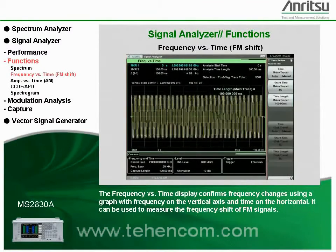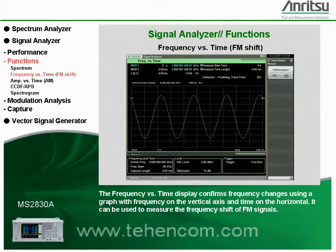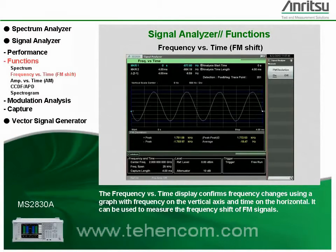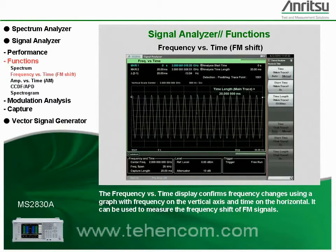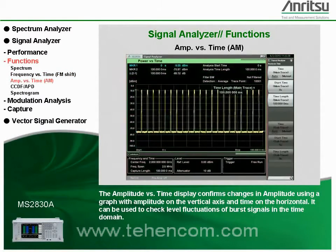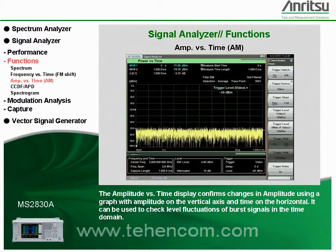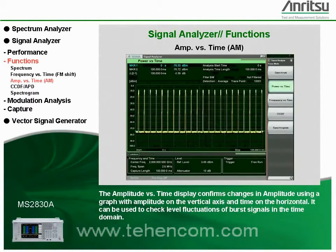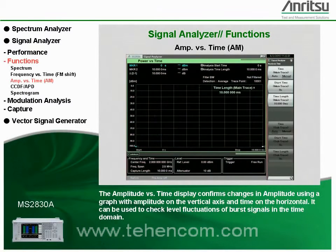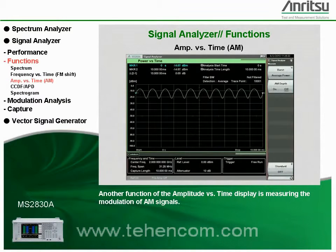The frequency versus time display confirms frequency changes using a graph with frequency on the vertical axis and time on the horizontal. It can be used to measure the frequency shift of FM signals. The amplitude versus time display confirms changes in amplitude using a graph with amplitude on the vertical axis and time on the horizontal. It can be used to check level fluctuations of burst signals in the time domain, as well as measuring the modulation of AM signals.